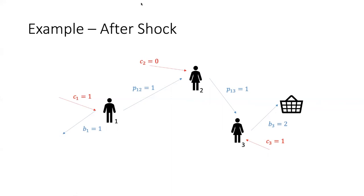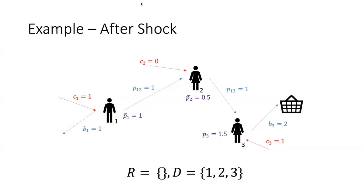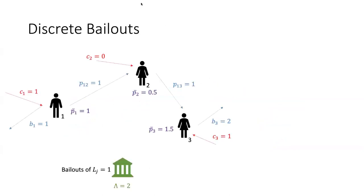Assuming now that a shock hits the network and reduces node one's assets from two to one, and the assets of node two from one to zero, and doesn't affect node three. Calculating the new equilibrium vector, we see that node one can pay one, node two can pay 0.5, and node three can pay 1.5. Therefore node one should now give 0.5 to node two and 0.5 to the external network. The set of default nodes is now {1, 2, 3} and the set of solvent nodes is empty.